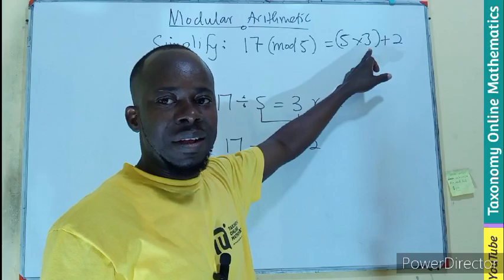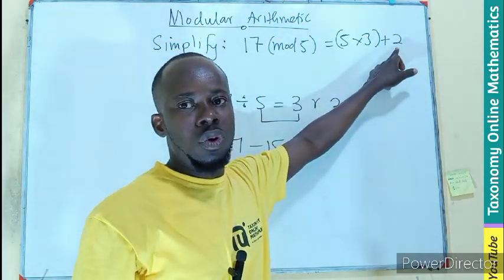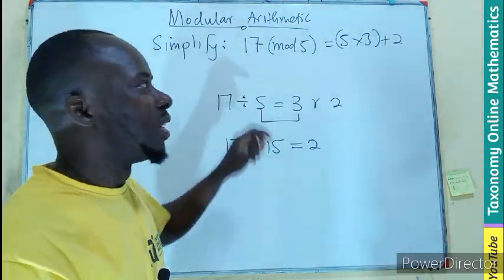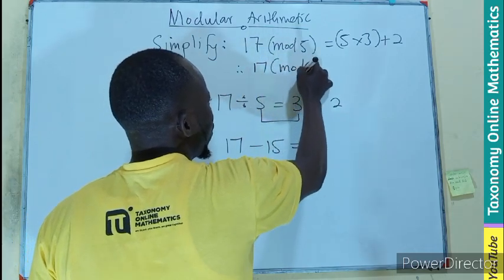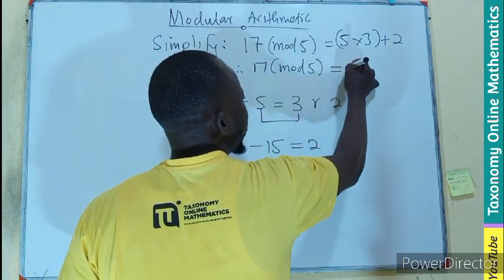5 times 3, 15 plus 2 give you 17. So therefore 17 mod 5 will be equal to 2.